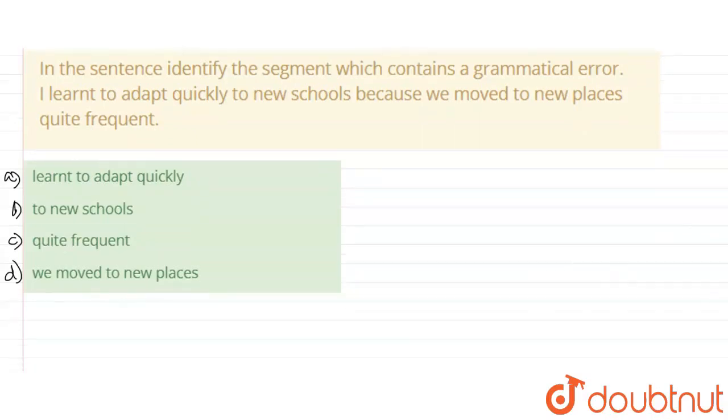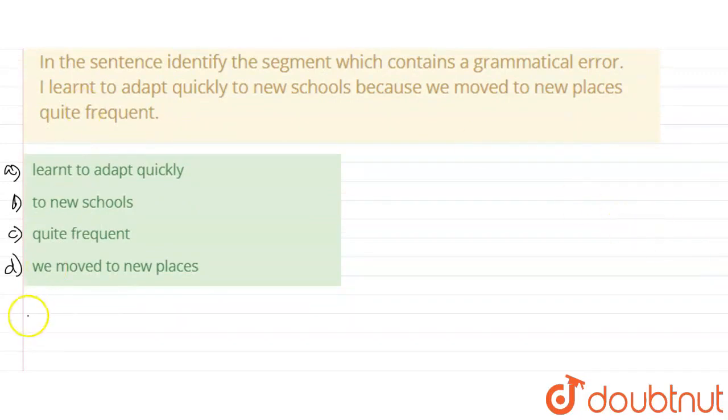Where does the grammatical error? Look at this. What you see here, I learned to adapt. I learned to adapt quickly. There is no grammatical error.